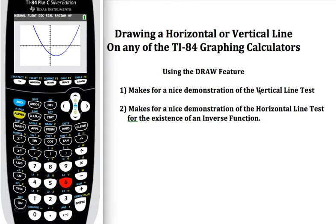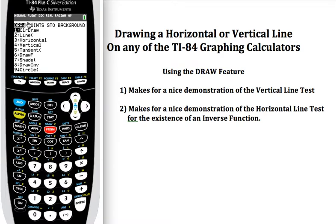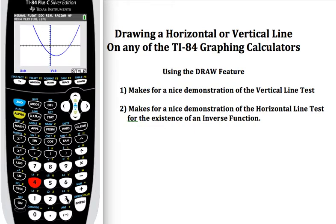So there's my parabola. First let's do the vertical line test. I'm going to hit second and then draw. And from this list I'm going to do the vertical line test, so I'm going to select 4. So I'm going to press 4.